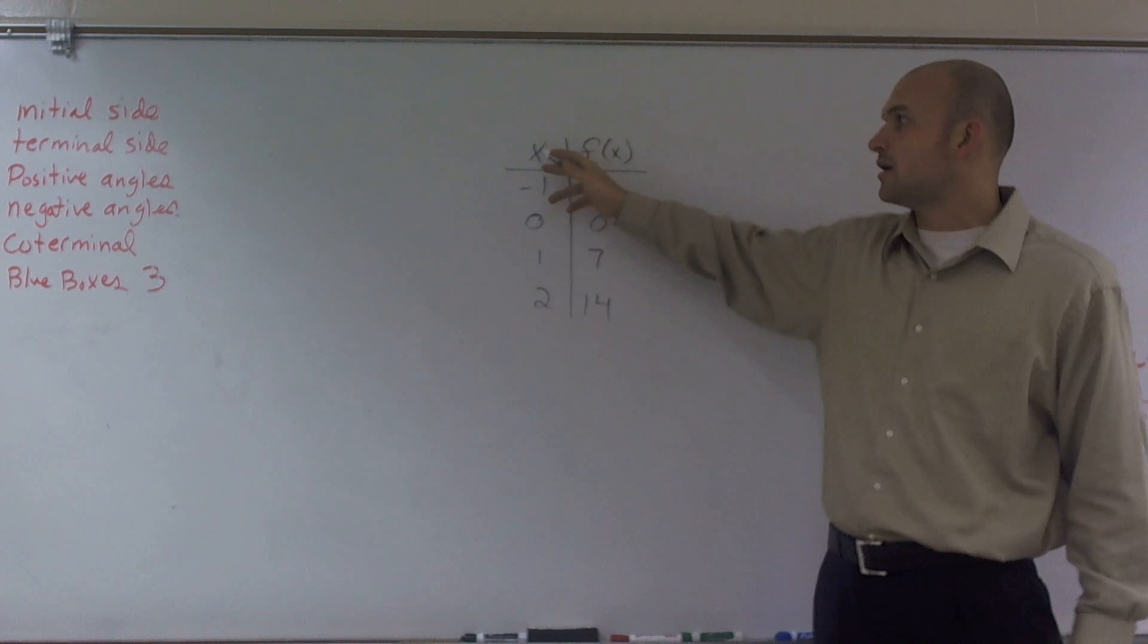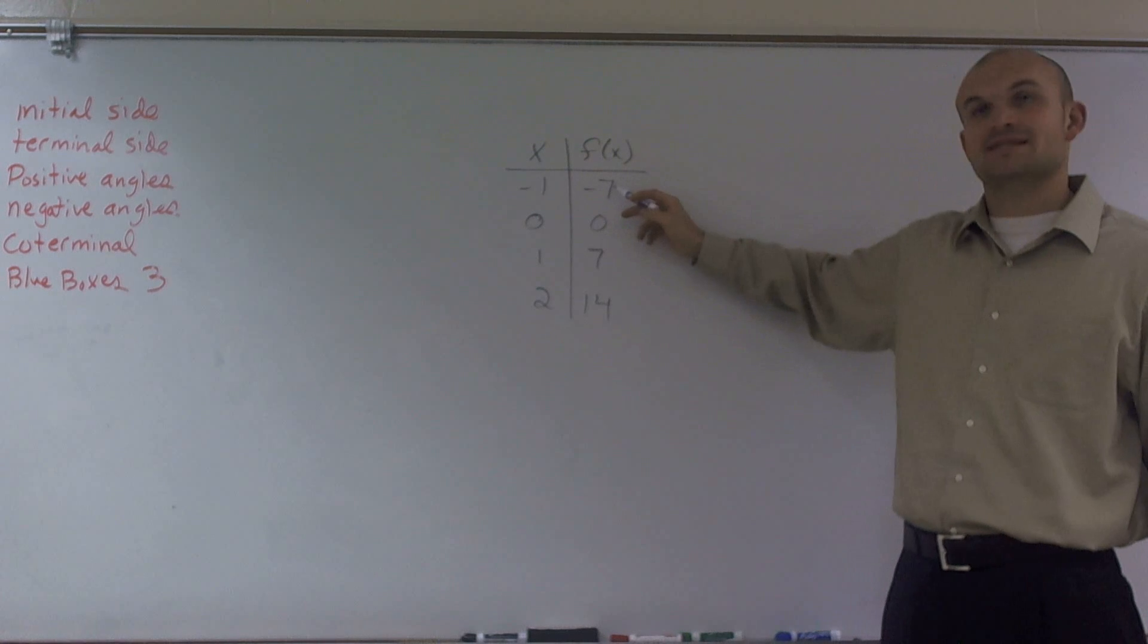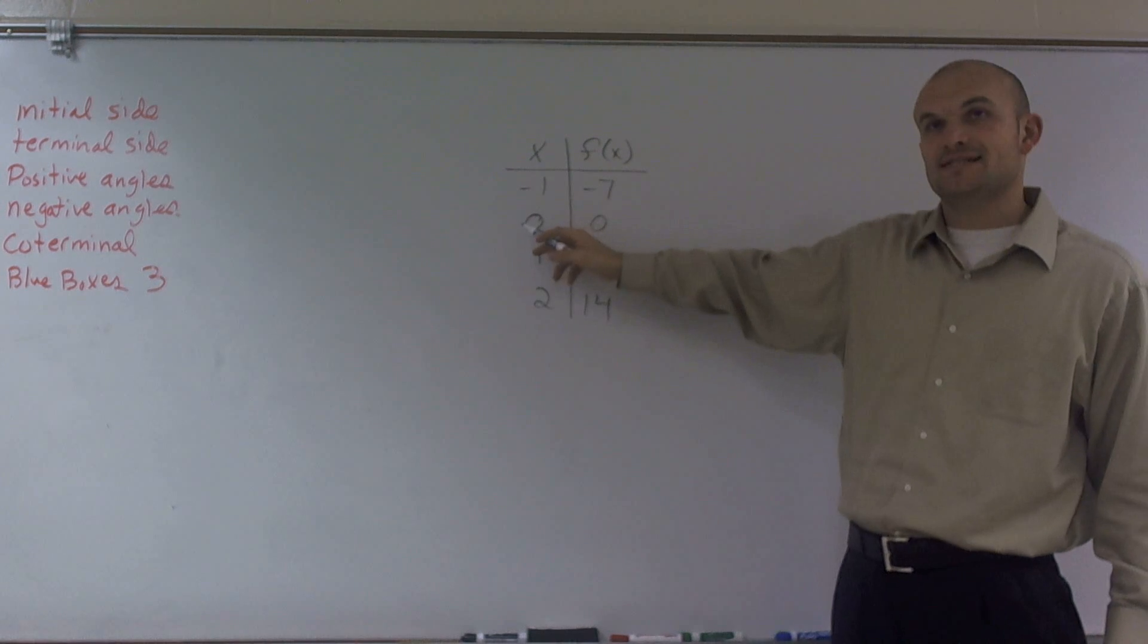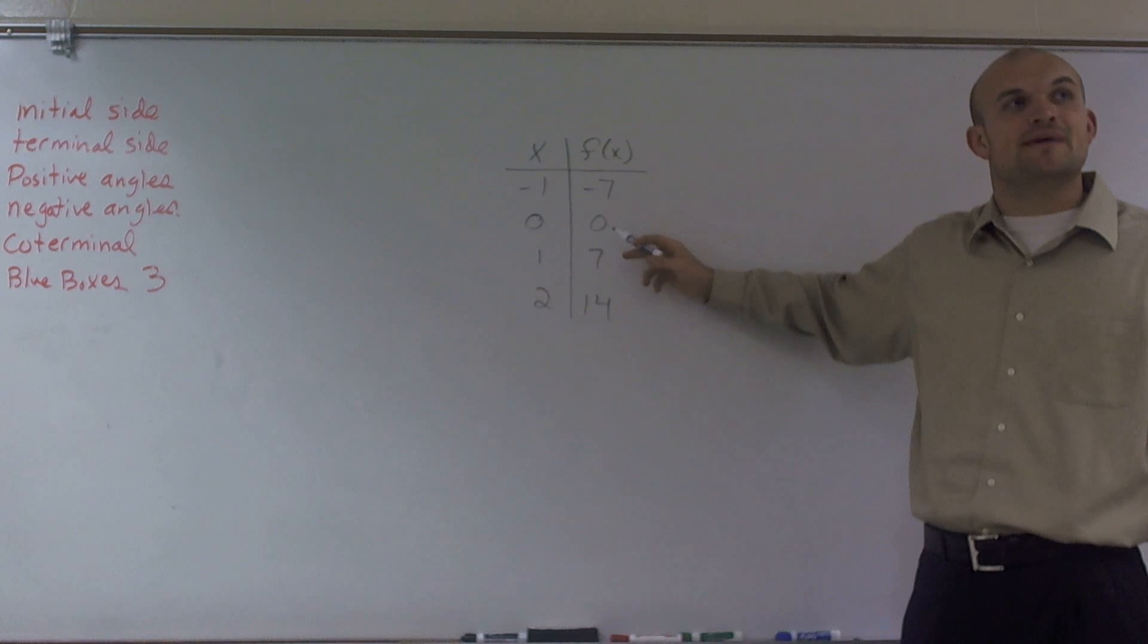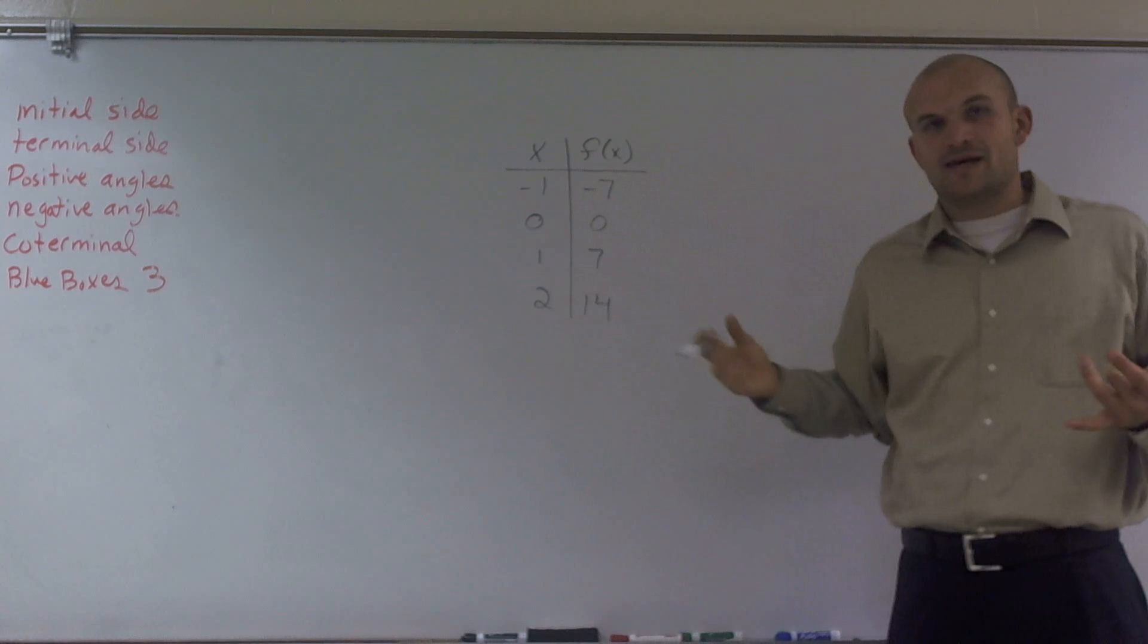So what we did was I said, well, when my input is negative 1, my output on my function was negative 7. When I plug in a 0, I now get a 0 as my output. So what am I doing to my function to get these values?